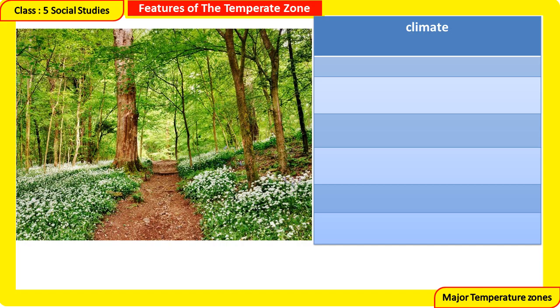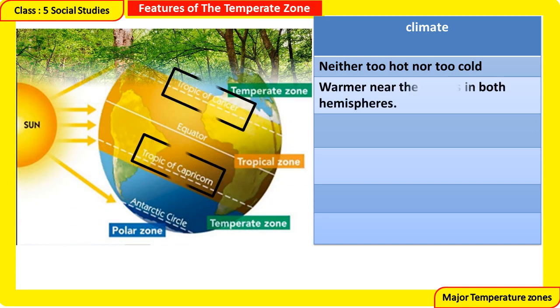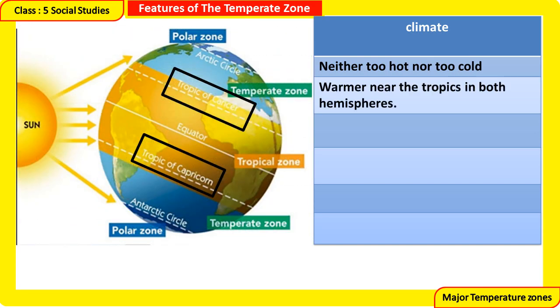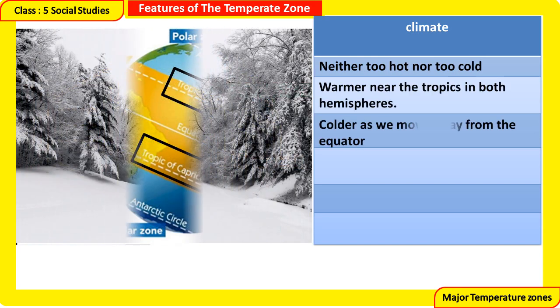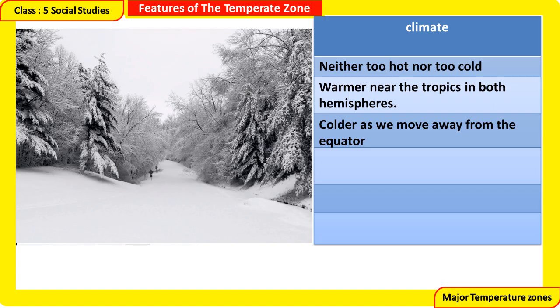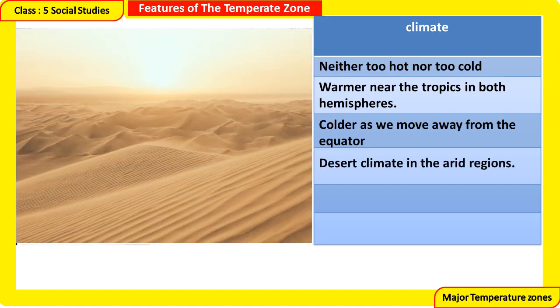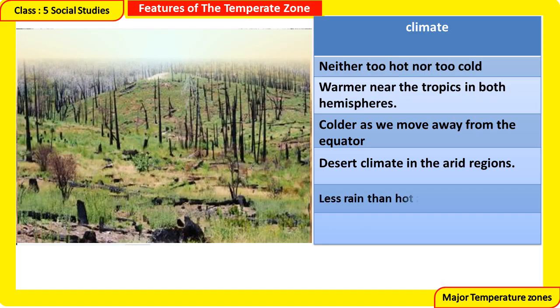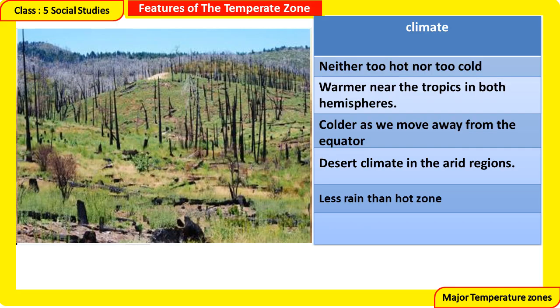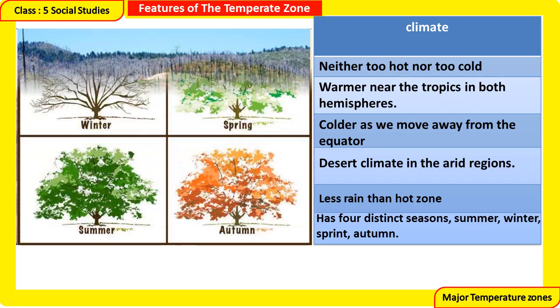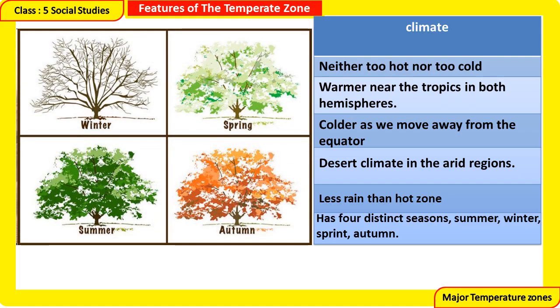Features of the Temperate Zone — Climate: neither too hot nor too cold. Warmer near the tropics in both hemispheres, and colder as we move away from the equator. Desert climate in arid regions. Less rain than the hot zone. Has four distinct seasons: summer, winter, spring, and autumn.